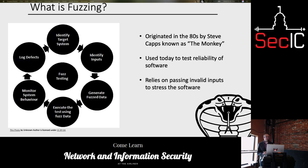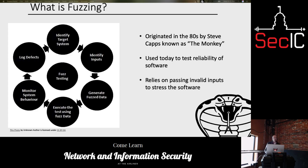Steve Capps did this for Apple, and at the time it was known as the monkey. What Steve Capps had done was make automated tests for Apple to determine what would happen if the cursor was moved to the wrong position or keystrokes were done in a way that wasn't expected.